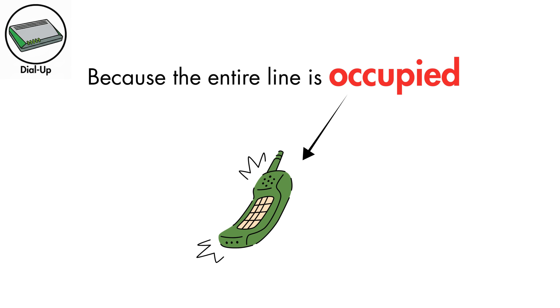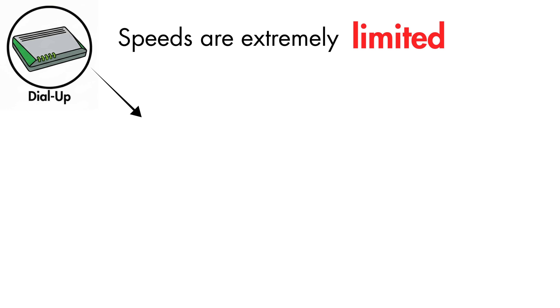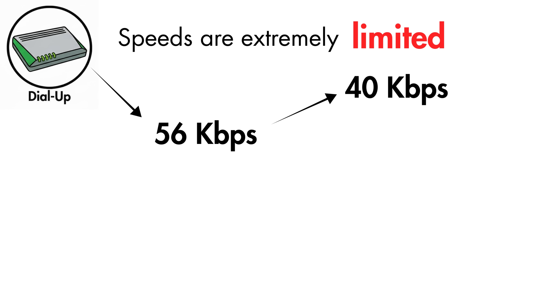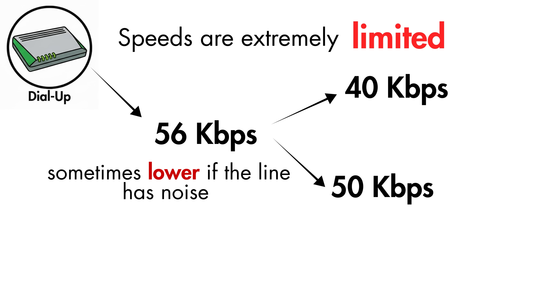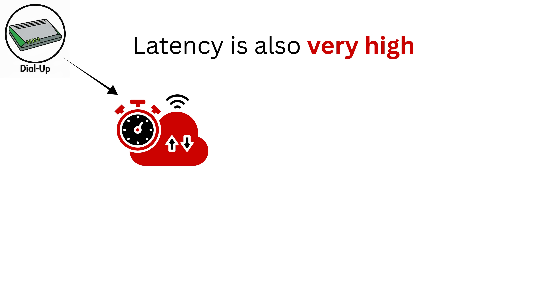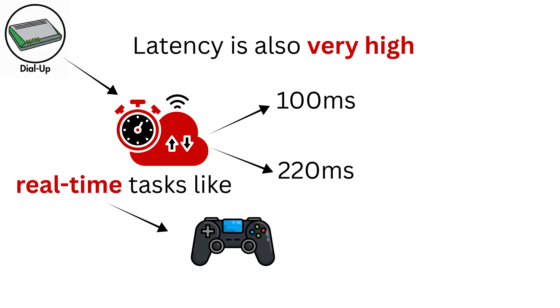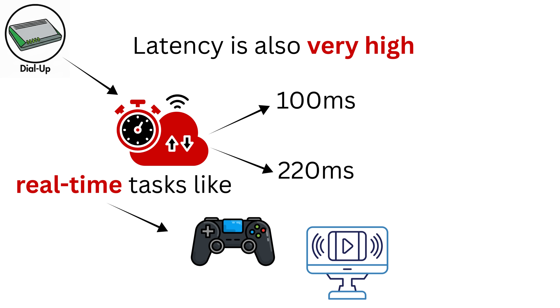Because the entire line is occupied, you can't use the phone for calls while you're online. Speeds are extremely limited — even though the theoretical maximum is 56 kbps, real speeds usually land between 40 and 50 kbps, and sometimes lower if the line has noise or if you're far from the telephone exchange. Latency is also very high, often 100 to 220 milliseconds or more, making real-time tasks like gaming, streaming video, or VoIP nearly impossible.